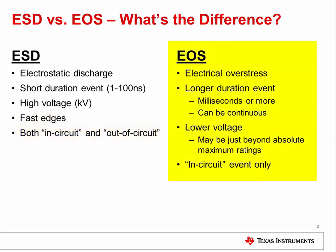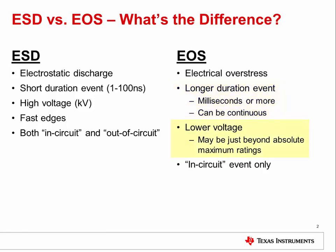EOS, or electrical overstress, happens when a voltage is applied that exceeds the absolute maximum rating of the device. An EOS event can be a long duration event — it may be milliseconds, seconds, or even a continuously applied overstress voltage. The voltage level is typically lower than an ESD voltage; in fact, it may be just over the absolute maximum of the device. For example, applying 10 volts to a device with an absolute maximum rating of 7 volts will cause EOS damage.